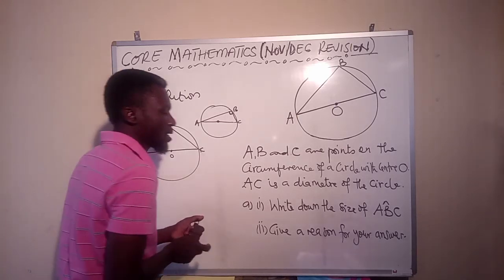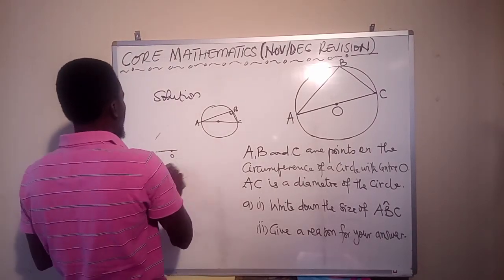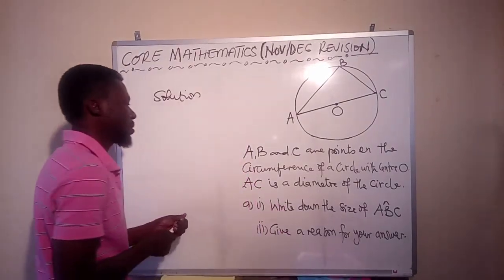So that informs our answer. That informs our decision. So now you know what the value of A, B, C is. So angle ABC is.